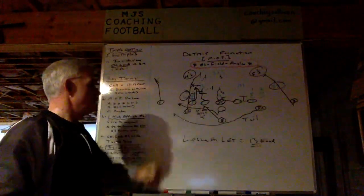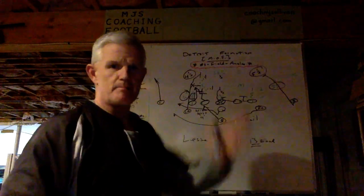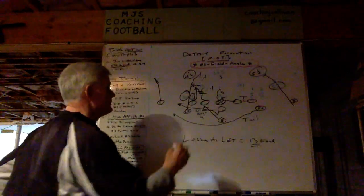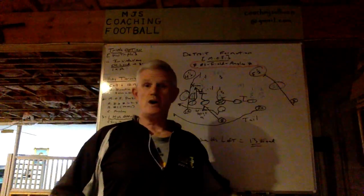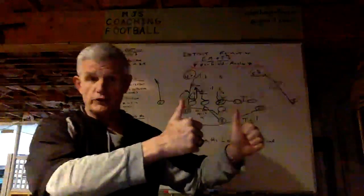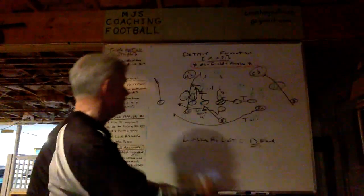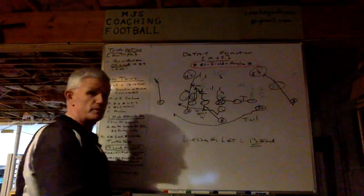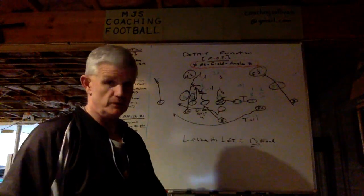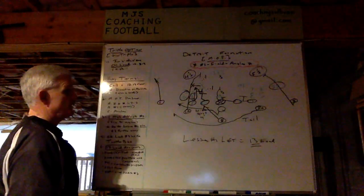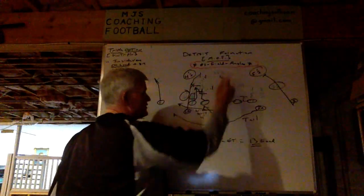The A back goes in tail motion — one, two, three — and steps outside the leg of the guard on that third step, then gets north and south. The quarterback is reading the inside shoulder of number one, giving the ball unless those shoulders come down hard on the B back, then continuing into number two, reading inside shoulder again. But those are other presentations. That is how and why we're going to win against a one-high safety.